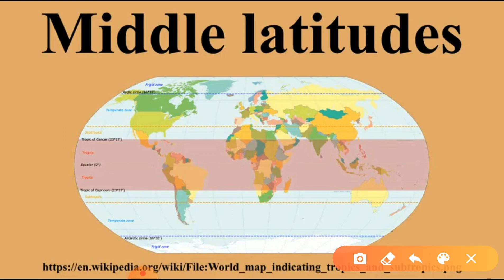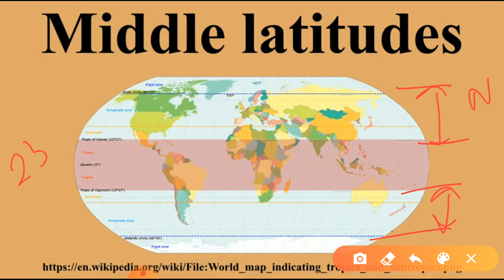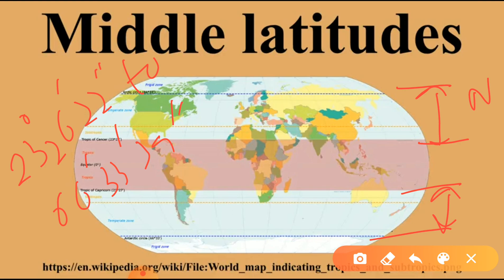The region which lies between the Tropic of Cancer and the Arctic Circle is called the middle latitudes in the northern hemisphere. In the southern hemisphere, the area between the Tropic of Capricorn and the Antarctic Circle is called the middle latitudes. If we talk about the degrees, they are 23 degrees 26 minutes 22 seconds to 66 degrees 33 minutes 39 seconds in both the northern and southern hemispheres.